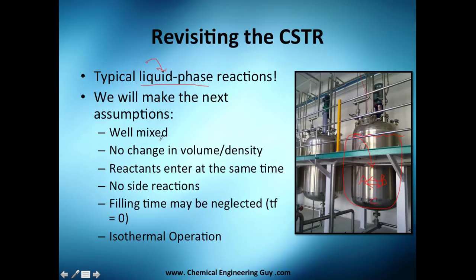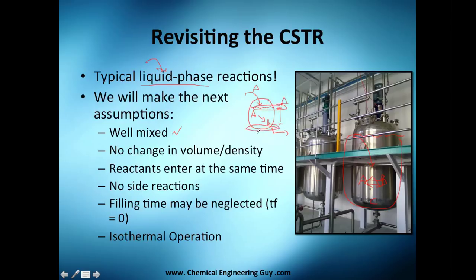The key assumptions for this chapter: first, the reactor is well-mixed. Many people point out that in reality there would be concentration gradients — more A near the inlet and more B near the outlet. That's true, but we assume perfect mixing so there are no gradients. This means the concentration of A inside the reactor is the same as the concentration of A at the outlet.